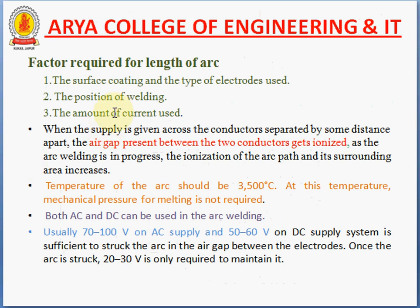Factors required for the length of arc include: the surface coating and type of electrodes used, the position of welding, and the amount of current used. When supply is given across conductors separated by some distance, the air gap between them gets ionized. As arc welding progresses, the ionization of the arc path and its surrounding area increases.